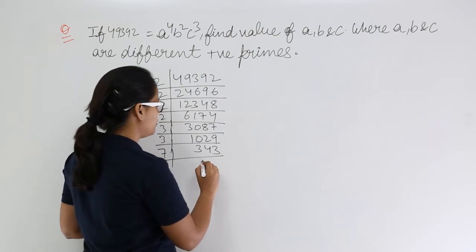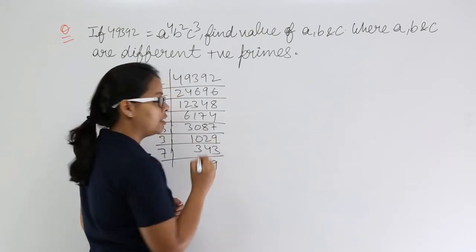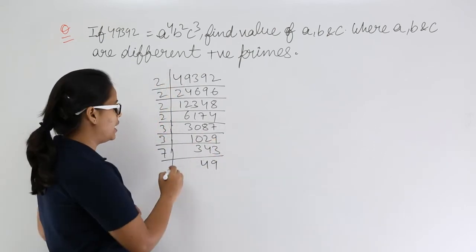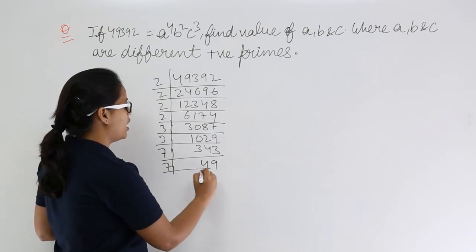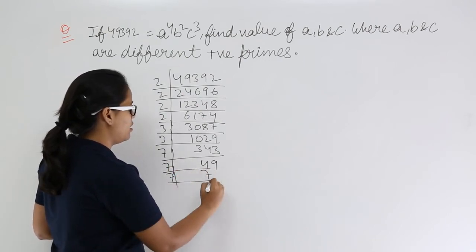This will be 49 after getting divided. And 49, 7 times 7 is 49. And 7, you will get this.